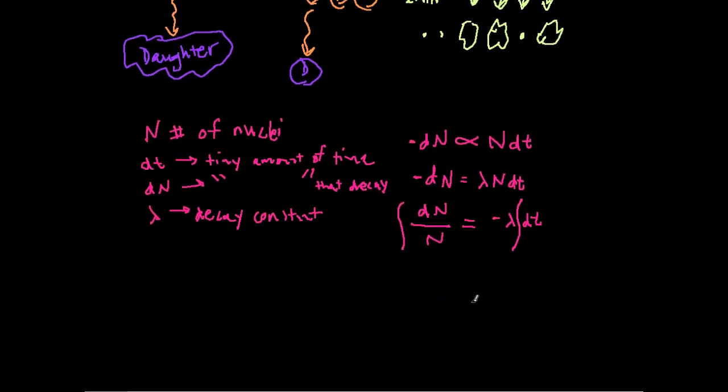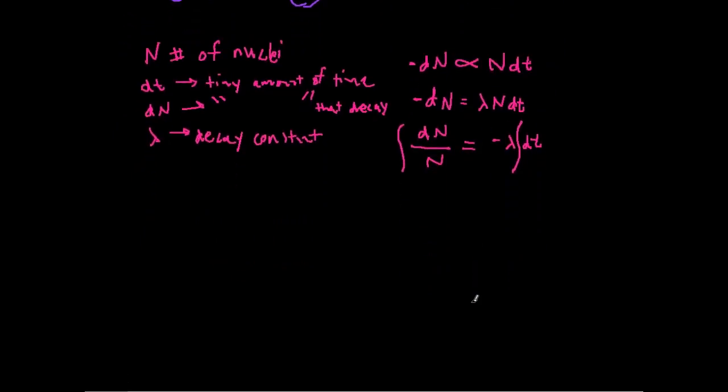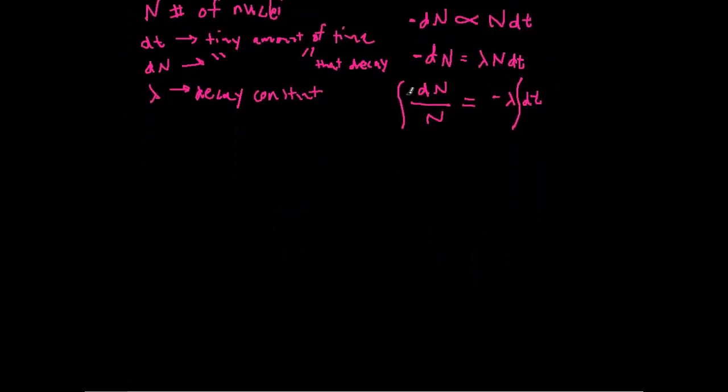Now you may recall that the integral of dn over n, that integral equals the ln of n, and I'm also going to say, we can tell that this is going to be dependent on t. That's why I have this n of t, because it's dependent on the time t, equals negative lambda, integral of dt is just t, and then also since this was an indefinite integral, we have to have some constant of integration.